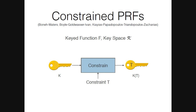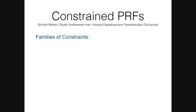As the name suggests, the constrained key can be used to evaluate the PRF at all points that satisfy the constraint. More formally, for all inputs x such that x satisfies constraint t, we have f(k, x) = f(kt, x). For security, we require that if an adversary has a key for some constraint t, they should not be able to evaluate the PRF at points outside the constraint. A natural question is how to express these constraints.